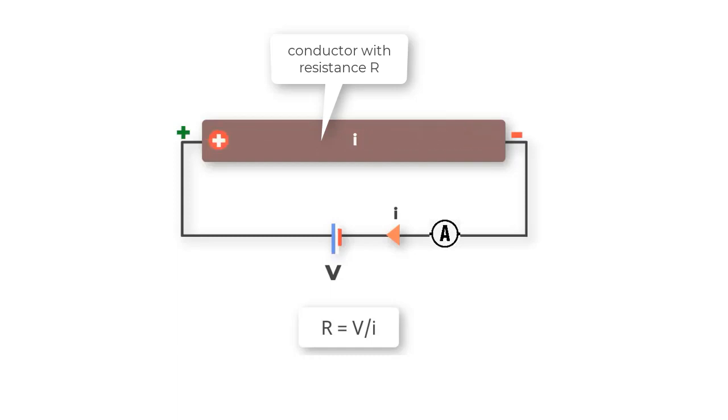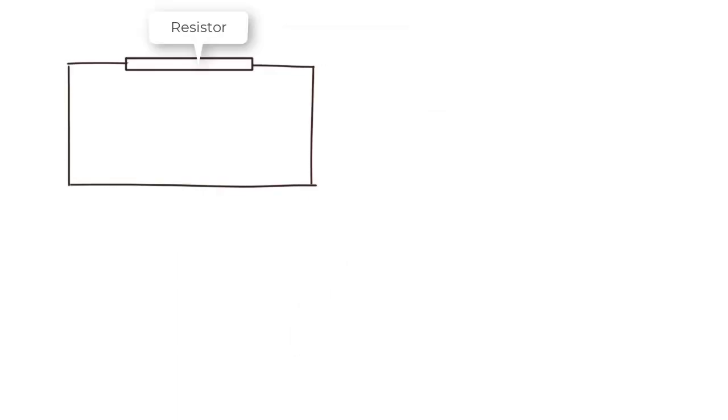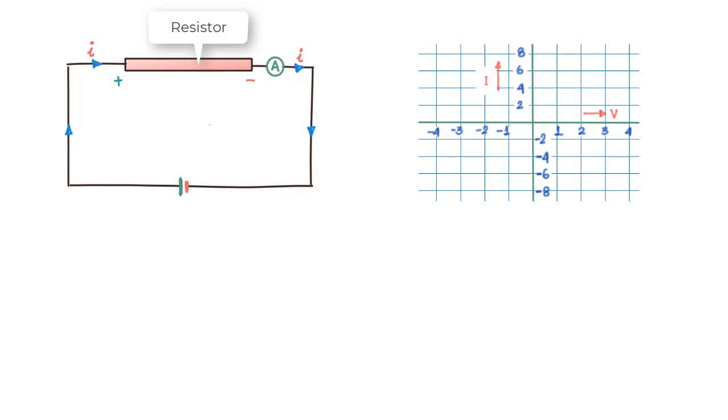Let us take this resistor and find how current I changes as we vary voltage V, and we'll plot these values on an I versus V graph. To start with, we'll apply zero volts across the terminal and we get zero current, then we increase the voltage to one volt and find that the current value is 2 milliampere.